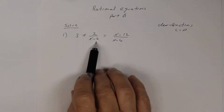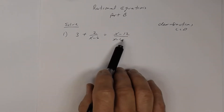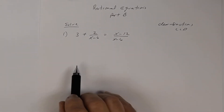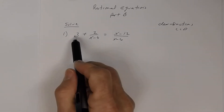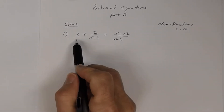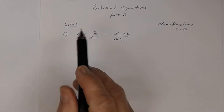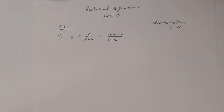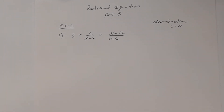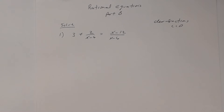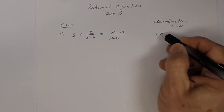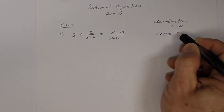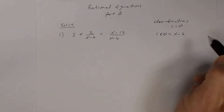Notice that this is x minus 6, this is x minus 6, and this right here is 3 divided by 1, so there's nothing else to factor. So the LCD here is going to be x minus 6.